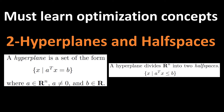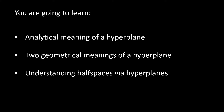Hello and welcome to my channel. This is the second video from the 'Must Learn Optimization Concepts' playlist. In this video, we are going to learn what hyperplanes and half spaces are. A hyperplane is the set of points satisfying an equality, and a half space is the set of points satisfying an inequality. Therefore, hyperplanes are associated with linear equalities and half spaces are associated with linear inequalities.